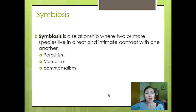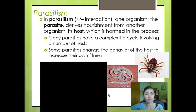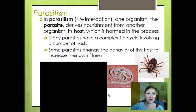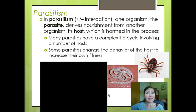Symbiosis is where two organisms live in direct and intimate contact with one another. The three types are parasitism, mutualism, and commensalism. In parasitism, one organism benefits and one is harmed — the parasite takes nutrients from the host. Many parasites have complex two-part life cycles requiring two different organisms to complete. They're very much adapted to their host organisms and cannot live without them. Some parasites even change the behavior of the host to increase their own fitness.